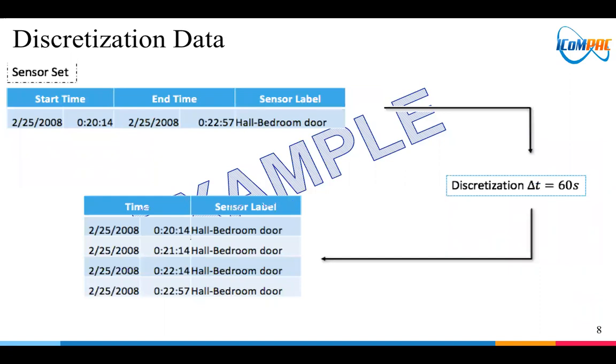So next, we explain about the preprocessing data step. First, discretization data. In this step, we try to enrich our data by discretizing the data with time interval one minute for each sensor.